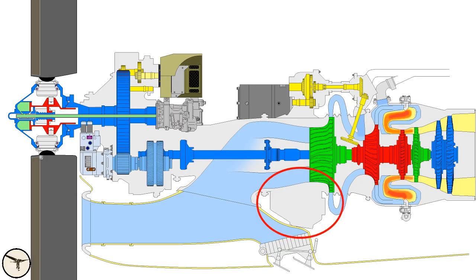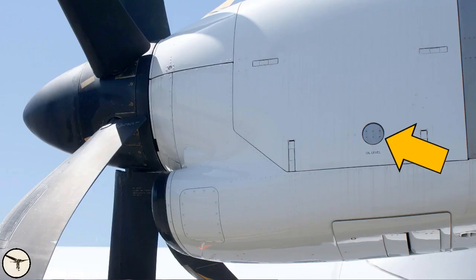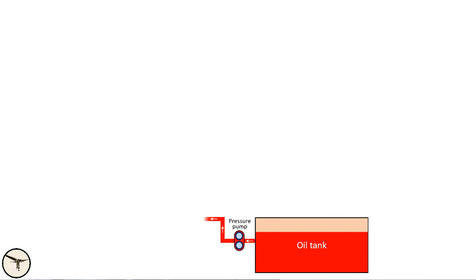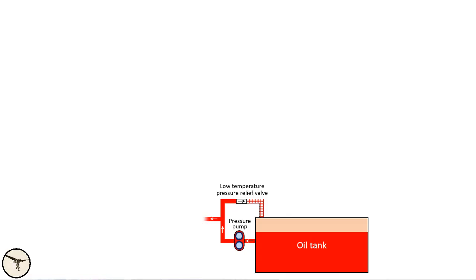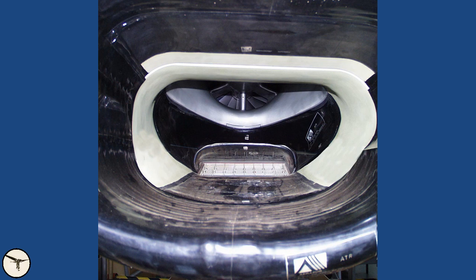The oil system lubricates the bearings in the gas turbine and the accessory gearbox and provides cooling. The oil tank is located in the lower left-hand side of the gas turbine, with a refill cap on top and a sight glass on the side. Bleed air provides a positive pressure to the lubrication system. A circular flap door on the engine cowling allows checking the oil level without opening the cowling. From the oil tank, oil flows to the oil pump driven by the accessory gearbox. On ATR 42-300, 320 and 400 the cooler is located below the engine air intake duct; on all other ATR variants it is located aft of the engine air intake duct.